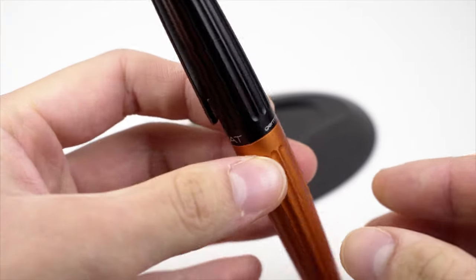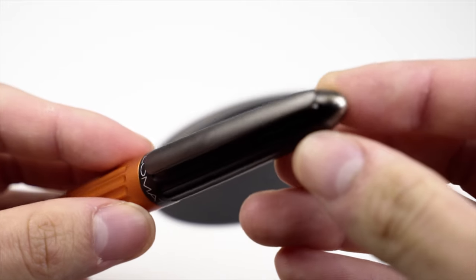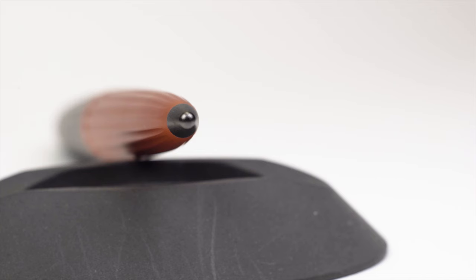The pocket clip is firm but isn't too stiff to the point where it's difficult to use. It has a nice bead-blasted matte finish. Both ends of the pen are capped off with an accented point, with the top having the Diplomat logo.